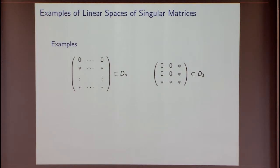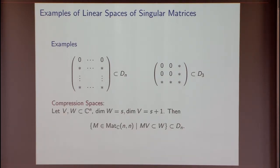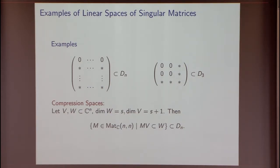I can do a similar construction to get what is called a compression space. I take an S-dimensional vector space W and an (S+1)-dimensional vector space V, both subspaces of C^n. I look at all those matrices which are mapping this (S+1)-dimensional space V into the S-dimensional space W. Since I'm compressing something (S+1)-dimensional down to something S-dimensional, this gives me a linear subspace of D_n which we'll call a compression space. These are the linear spaces of singular matrices which are easy to understand.